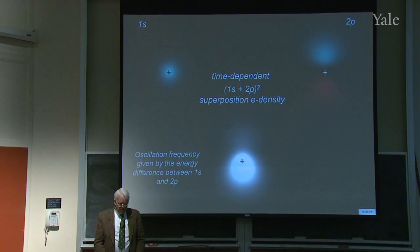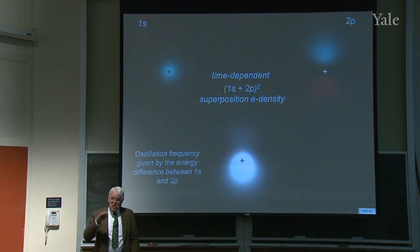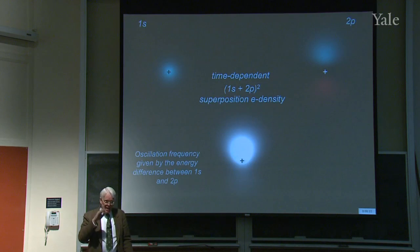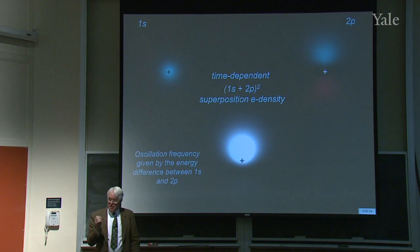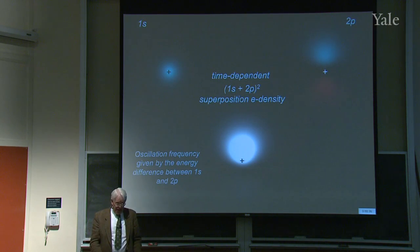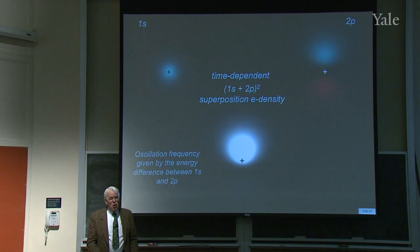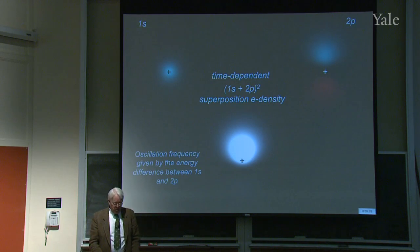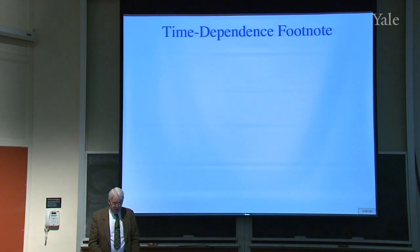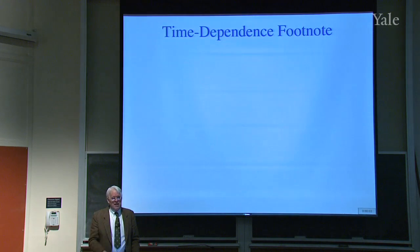The oscillation frequency — how rapidly the electron density goes up and down, that is, what color or frequency of light would interact with it — has to do with the energy difference between the 1s and 2p orbitals. This is just a footnote; you're not deeply responsible for this, but it's neat to know about.